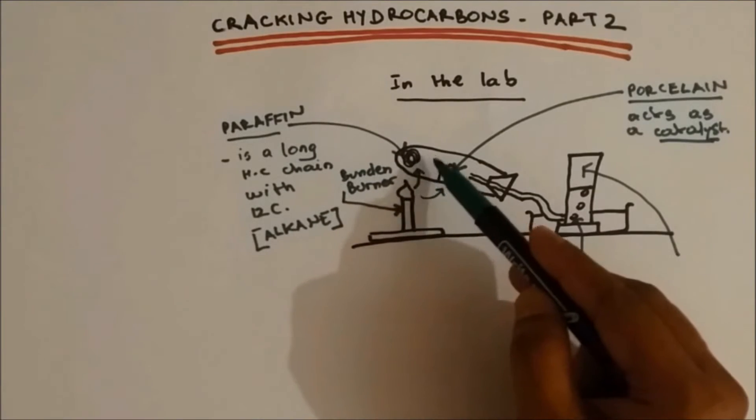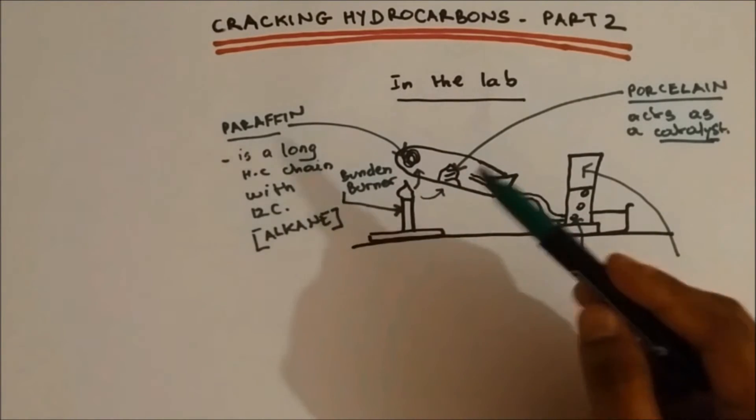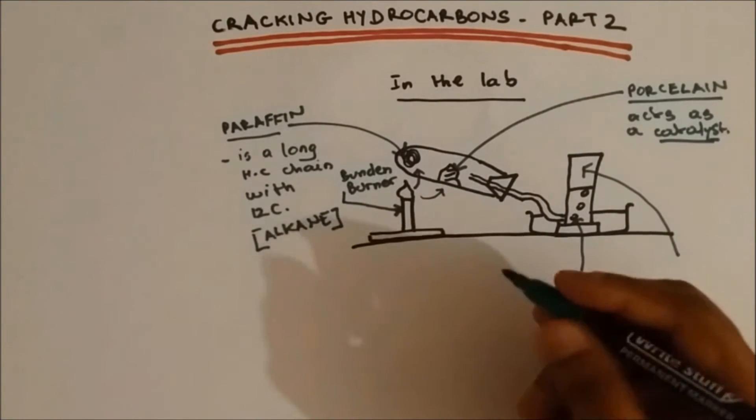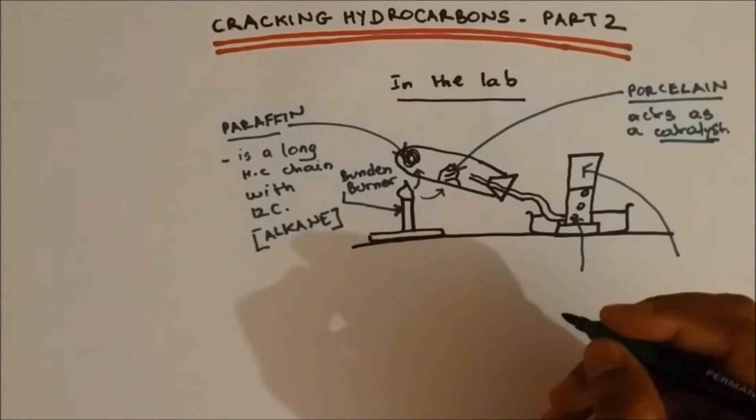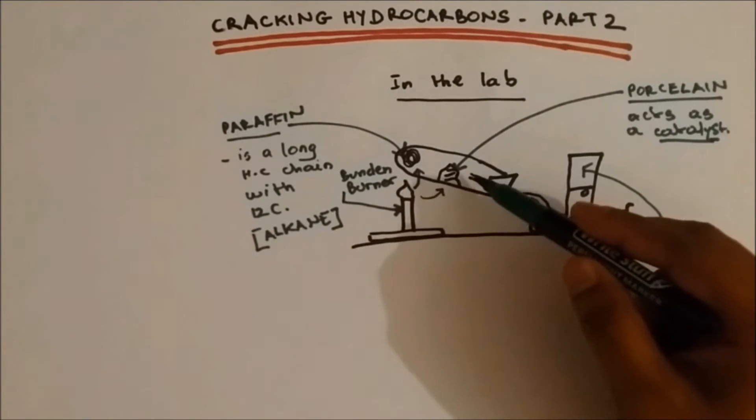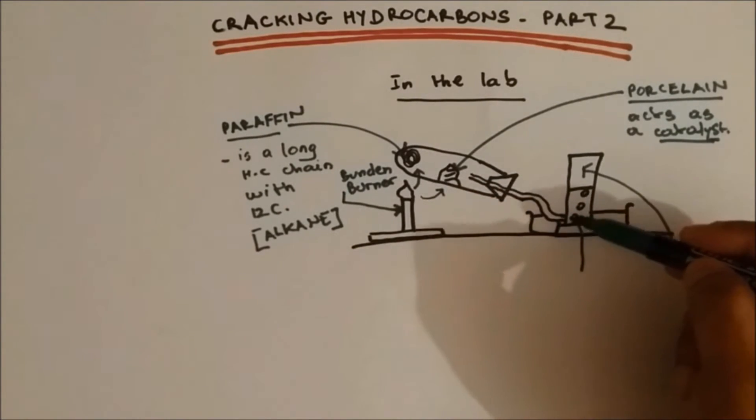When the long hydrocarbon chains are broken down, they will be formed into smaller alkanes and alkene. This will be found as a gaseous state at room temperature, so the gas will come out and in the water...